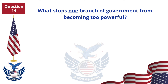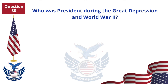What stops one branch of government from becoming too powerful? Checks and balances. Who was president during the Great Depression and World War II? Franklin Roosevelt.